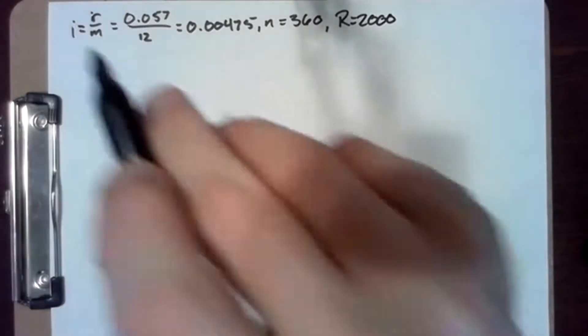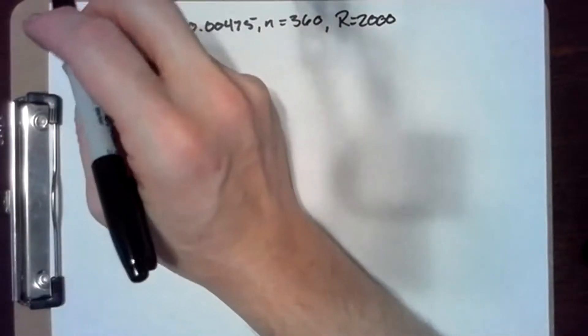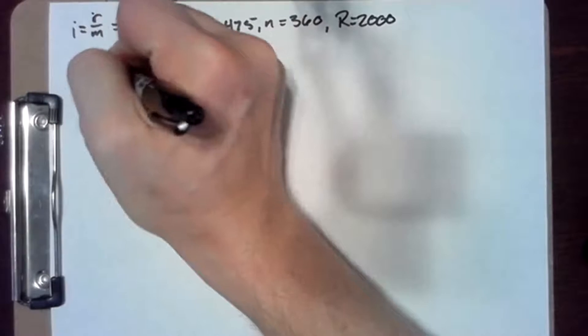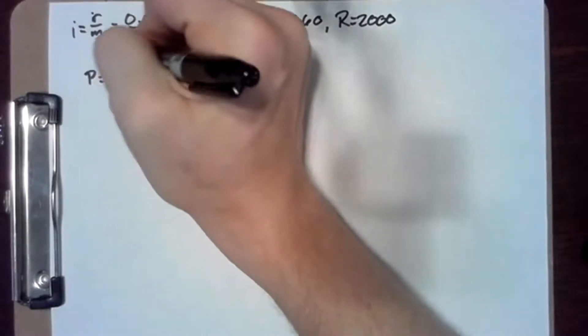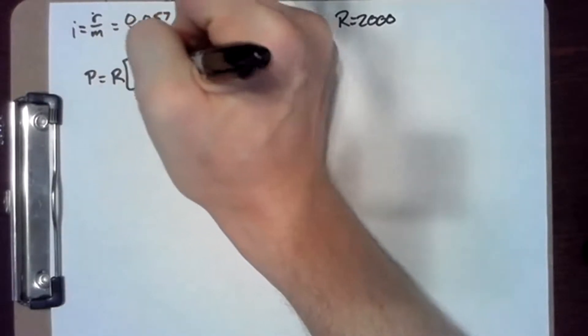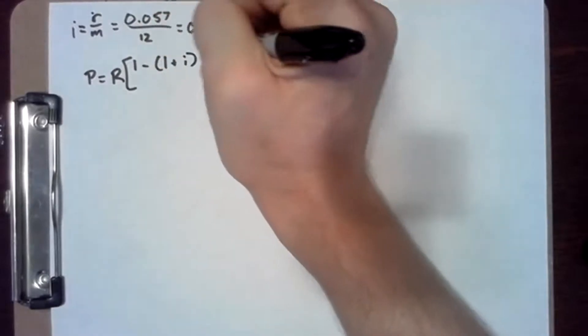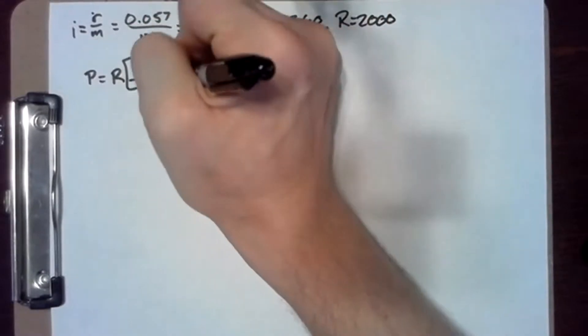We use our annuity formula: P equals R times one minus one plus i to the negative n, over i.